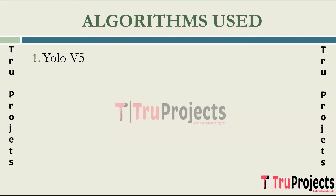YOLO V5 is the fifth version of the YOLO algorithm. It is built on a new architecture called Spatially Adaptive Denormalization, which uses semantic and spatial information to enhance object detection accuracy. It also introduces a new training algorithm called Mosaic Data Augmentation, which helps improve model generalization. YOLO V5 has gained popularity for its improved performance and flexibility, making it suitable for a wide range of applications.